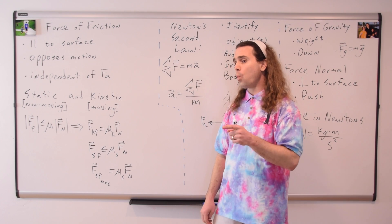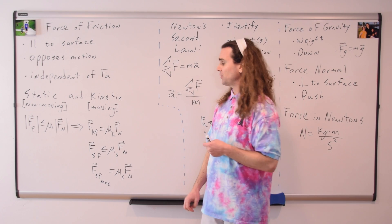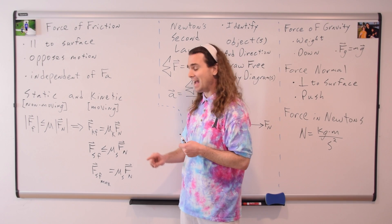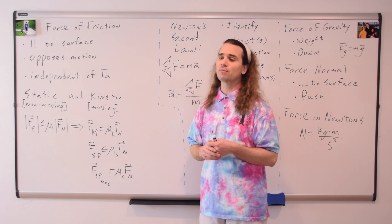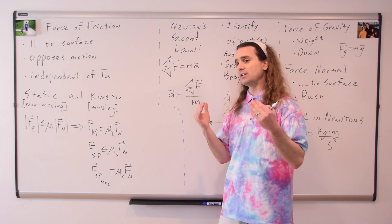Bo, what can you tell me about the relationship between the coefficient of kinetic friction and the coefficient of static friction between two surfaces? The coefficient of friction is experimentally determined and dimensionless, but I don't know what you mean by relationship. Remember, for two surfaces, the coefficient of static friction is always greater than the coefficient of kinetic friction. That's right — it's harder to put something into motion than it is to keep it moving.